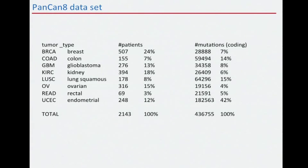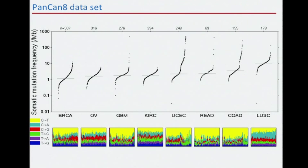This is the overview of the pan-cancer dataset. We have eight tumor types: breast, colon, glioblastoma, kidney, lung squamous, ovarian, rectal, and endometrial — totaling 2,143 patients and 436,755 coding mutations. We can see the spread of mutation frequencies across tumor types. Lung has a significantly higher mutation frequency than the rest, and within tumor types there is also variable mutation frequency.